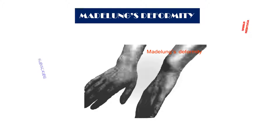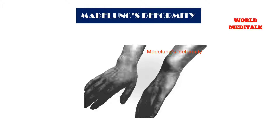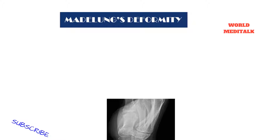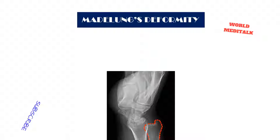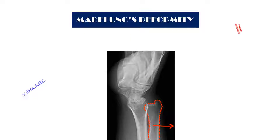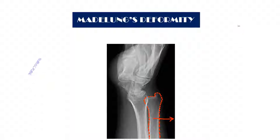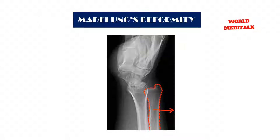It may be congenital or post-traumatic. The congenital disorder may appear as an isolated entity or as part of a generalized dysplasia. Although the abnormality can present at birth, the deformity is rarely seen before the age of 10 years, after which it increases until growth is complete.